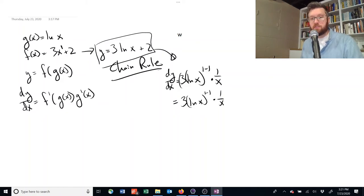And it turns out this is really simple, because anything, no matter how ugly or complicated, raised to the power of 1 minus 1, raised to the power of 0, is just 1.